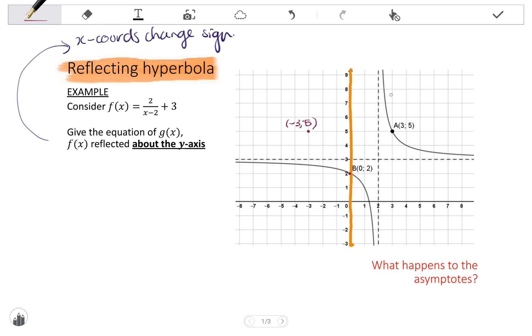What does also change is the vertical asymptote. Vertical asymptotes have equations x equals the value of the coordinate that it passes through. So, if this is an x-coordinate, x-coordinates change sign, so it will go to negative 2.